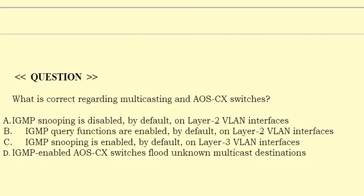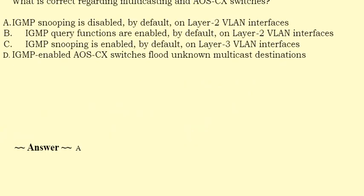Next question: What is correct regarding multicasting and AOS CX switches? Option A: IGMP snooping is disabled by default on layer 2 VLAN interfaces. Option B: IGMP snooping is enabled by default on layer 2 VLAN interfaces. Option C: IGMP snooping is enabled by default on layer 3 VLAN interfaces. Option D: IGMP-enabled AOS CX switches flood unknown multicast destinations. The correct answer is Option A.